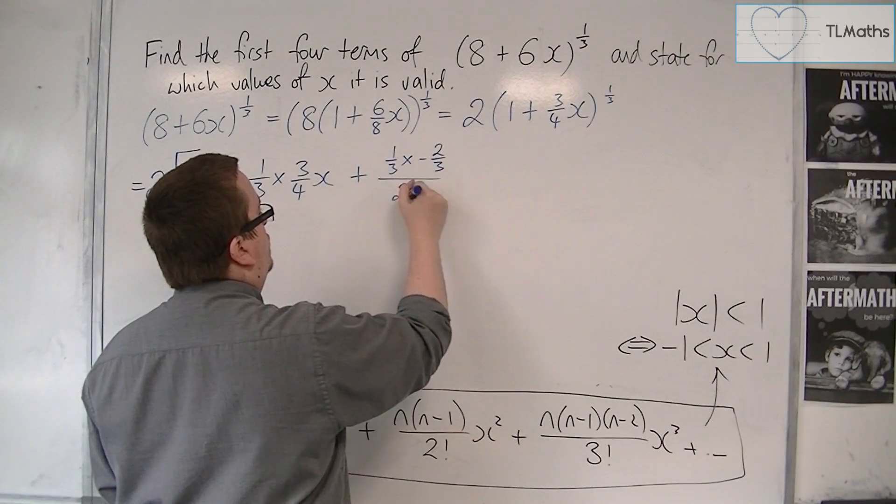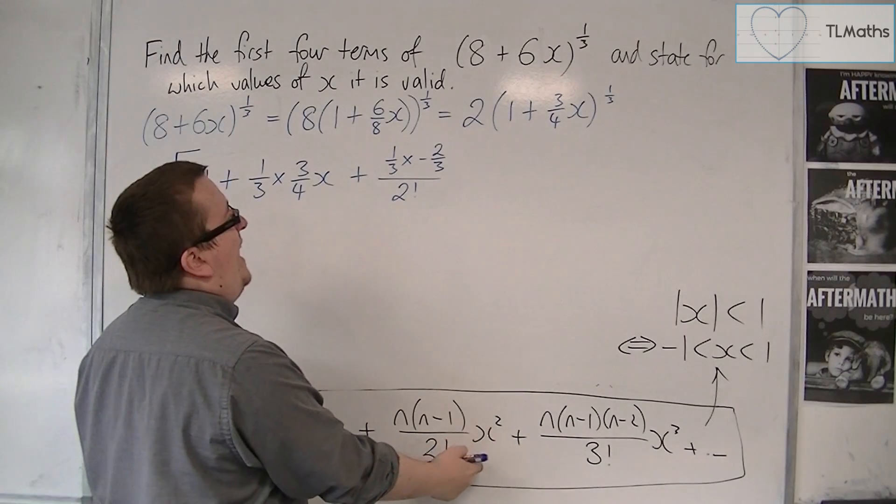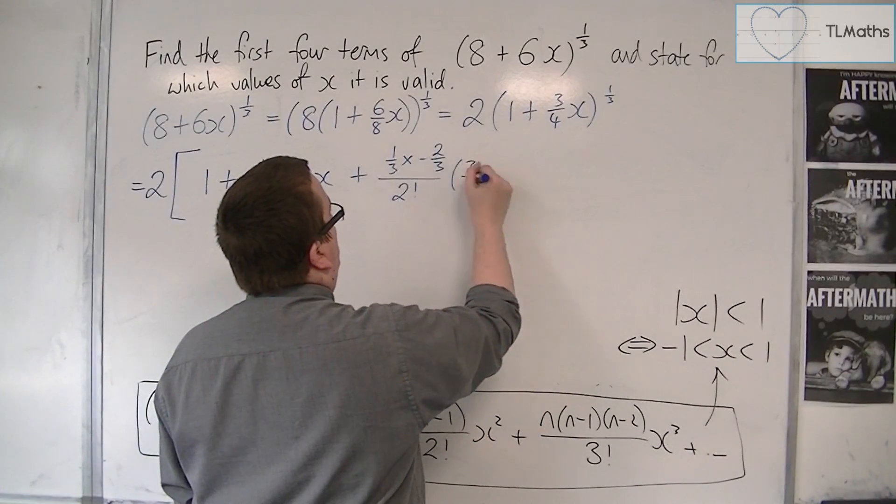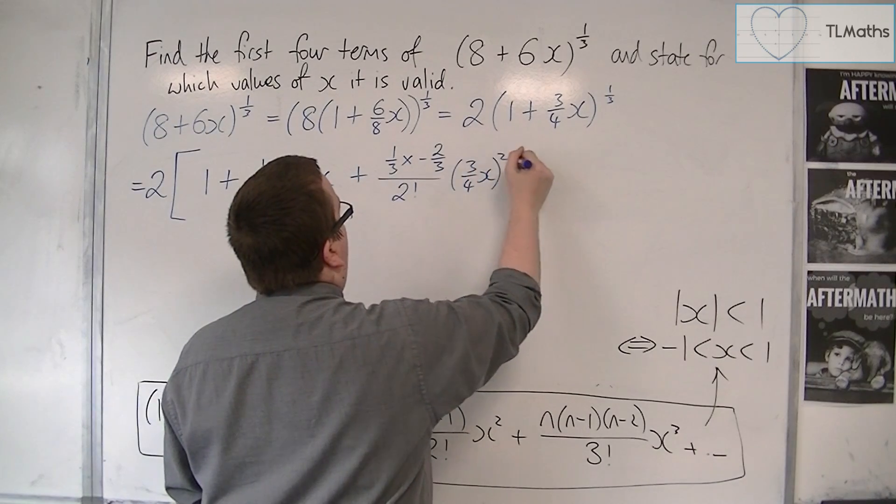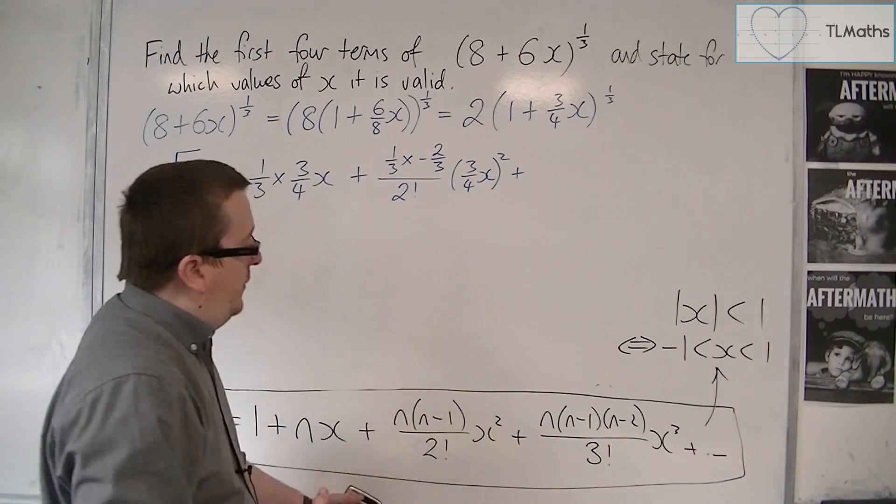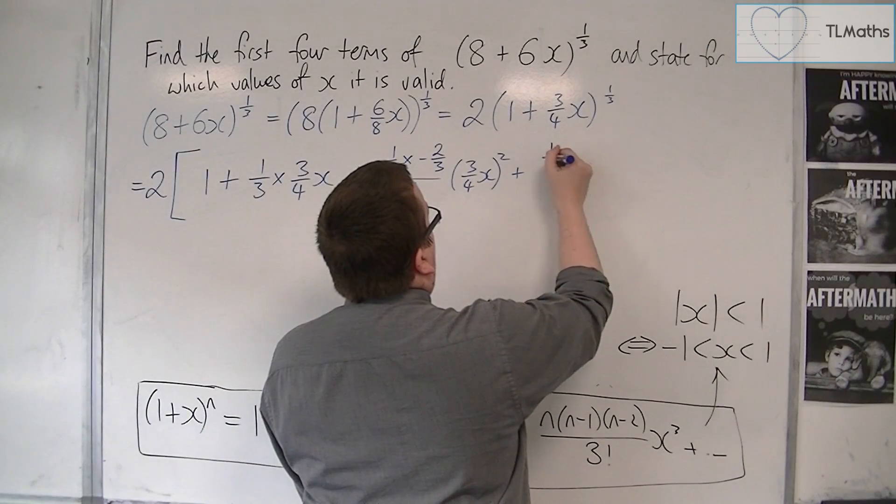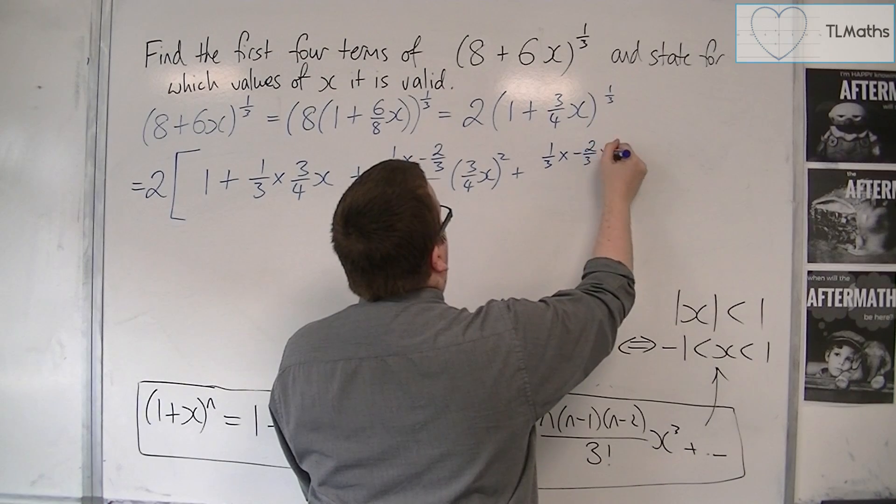Divided by 2 factorial, times by x squared. Now the x is being replaced with 3/4 x, so (3/4 x)^2, plus the next term. The fourth term is n times (n - 1), so -2/3, take away another 1 because we want n - 2.